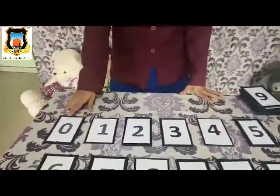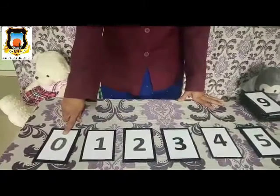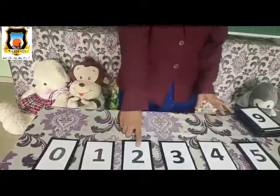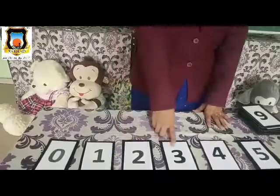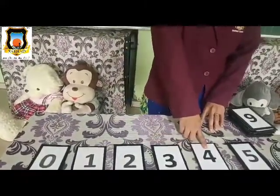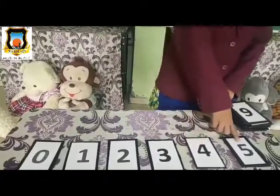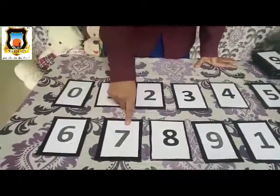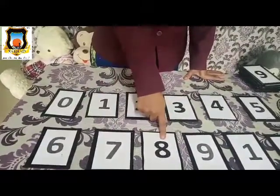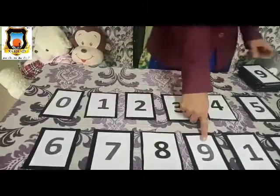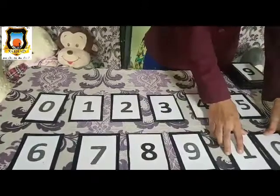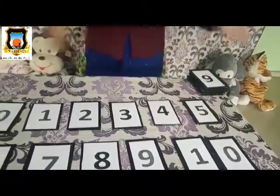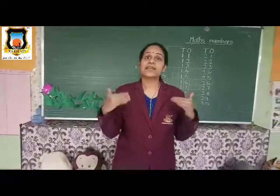Now look down. What is this? Say children, what is this? 0. Very good. Next number? 1. Very good. 2. Wow, so sweet. Next? 3. Very good. 4. Wow, super. Next number? Teacher, 5. Very good. Next number? 6. Good. Next number? 7. Very good. What is this? You tell? 8. Very nice. And now this one? 9. Very good. Now 1, 0 — 10. Very nice. So you already know all these numbers.